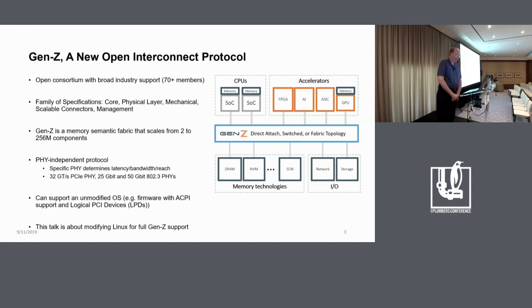And the reason there are these different PHYs is that PCI PHYs can go about this far and copper Ethernet PHYs can go about this far. And if you want to go further than that, like across a row of data center boxes or an entire data center, then you probably need to do an optical PHY. And there'll be some of those specified in Gen Z as well.